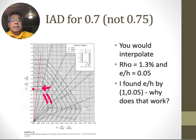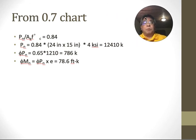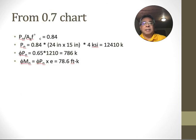I magnified it and read that point, and it was 0.84. The axis is Pn over Ag f'c, and I just solved for Pn. Phi Pn is 786 kips, and e was 1.2 inches, which is one-tenth of a foot, so 78.6 foot-kips.